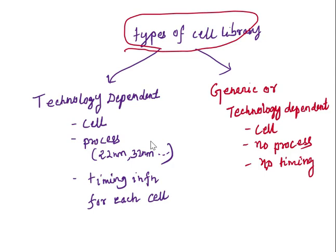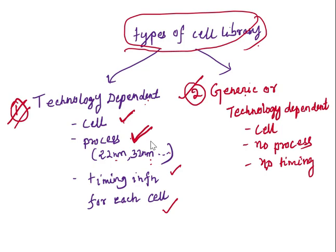There are two types of cell libraries: the first is technology-dependent and the second is generic or technology-independent. Inside the technology-dependent cell library, we find the cells — basic gates and components — along with a specific process like 22nm, 32nm, or 45nm, and it also gives timing information for each cell.